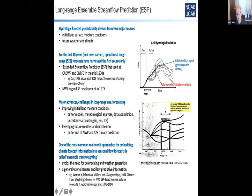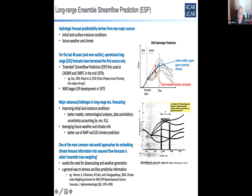This is a depiction of that ESP framework. One of the main weaknesses is that it assumes you know the initial conditions perfectly. One of the main ways people tried to incorporate climate forecast information into this ESP approach is to take those historical sequences and condition them based on climate information — from multiple sources. That's called a trace weighting or ensemble trace weighting approach, and there are many papers going back quite a while on that.